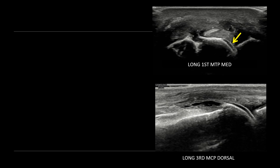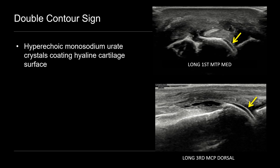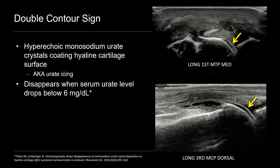Here's a different patient also with gout, involving the third metacarpophalangeal joint — the knuckle of the hand. There is a joint effusion with surrounding synovial hypertrophy, normal echogenic bony cortex of the metacarpal head, normal anechoic hyaline cartilage, but again this abnormal curvilinear echogenic line on the surface of the cartilage — the double contour sign. What's occurring is that monosodium urate crystals are coating the hyaline cartilage, giving it this hyperechoic appearance, also sometimes known as urate icing. This finding disappears when serum urate levels drop below 6 mg/dL. The first patient had a uric acid of 8.8 and the second had 8.0 — both above 6 mg/dL.